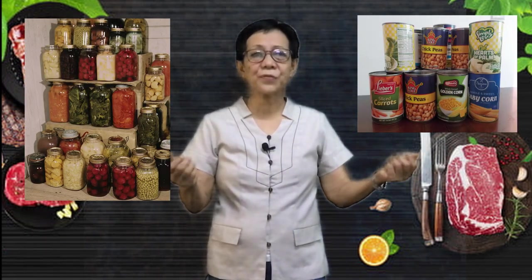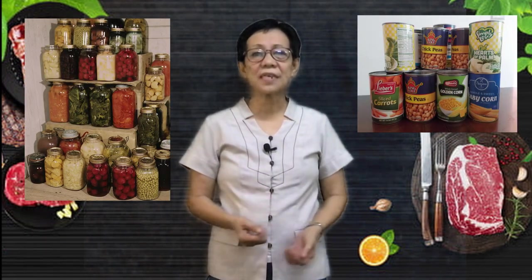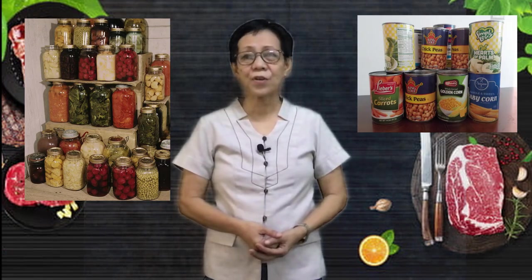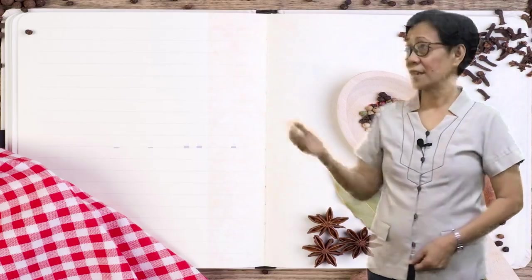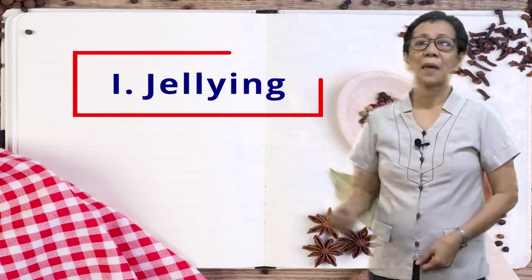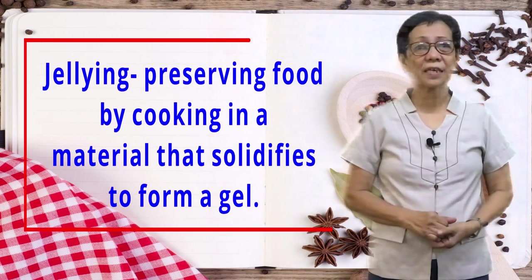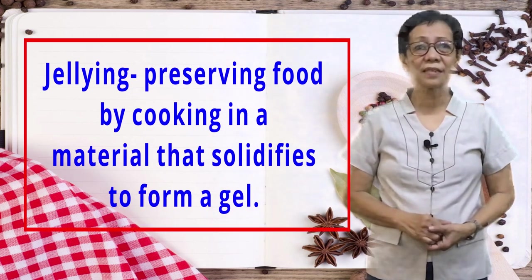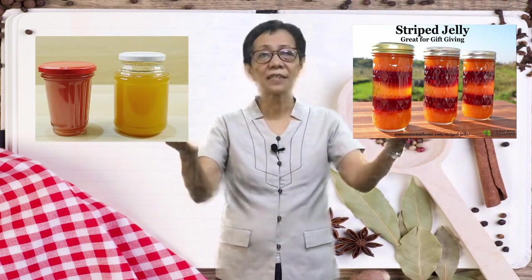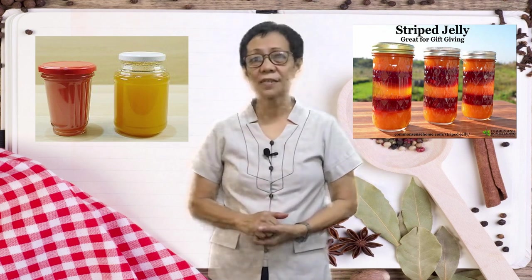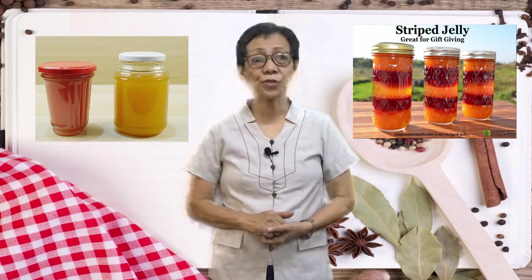Here are examples of food or products produced through canning or bottling. I think you are all excited with the last set of methods of food processing. Here they are. Letter I: Gellying — preserving food by cooking it in a material that solidifies to form a gel. Here are examples of food or products produced through gellying.